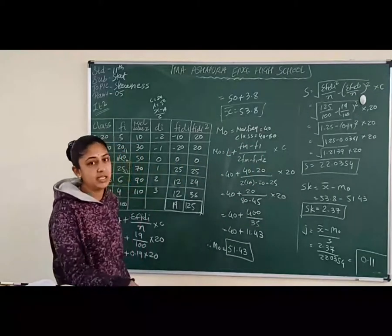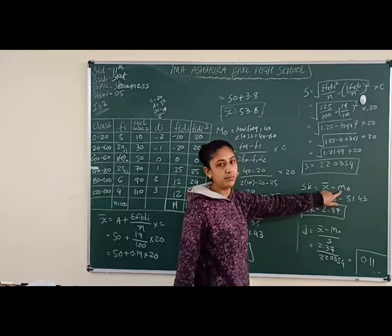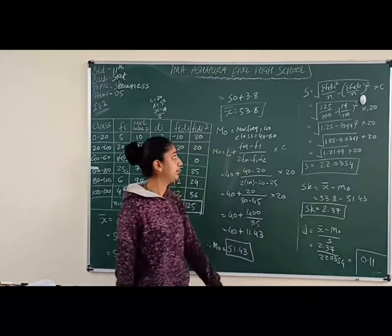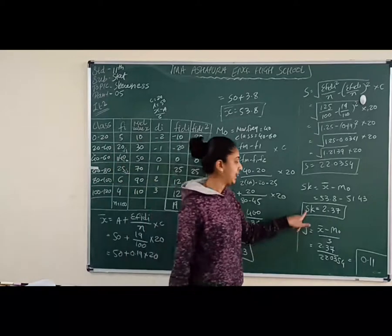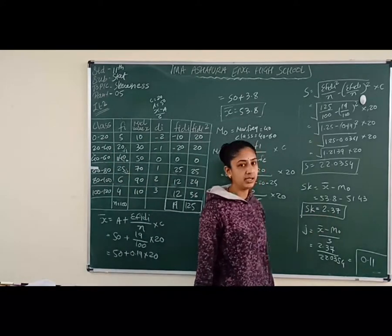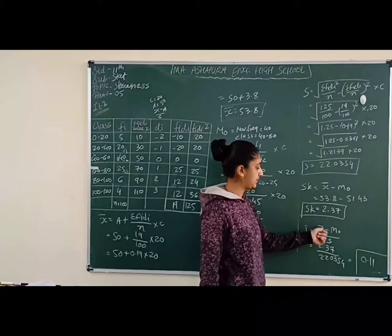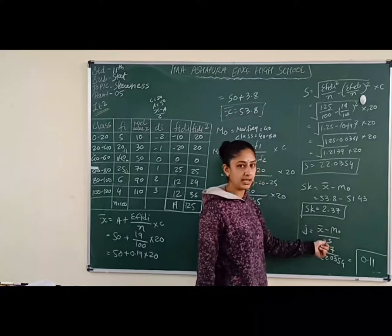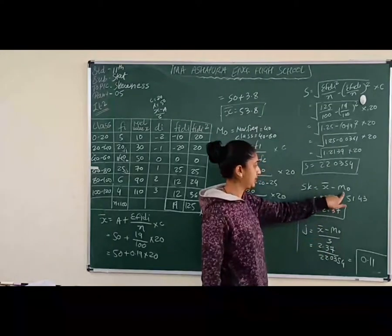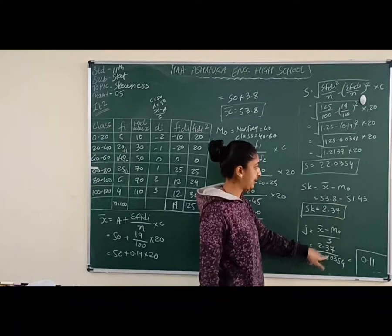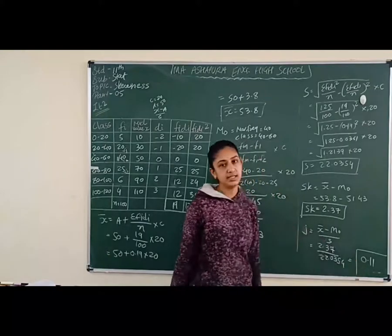Now skewness by Carl Pearson's method: Sk = x̄ − Mode = 53.8 − 51.43 = 2.37. Coefficient of skewness J = (x̄ − Mode) / S = 2.37 / 22.0354 ≈ 0.11.